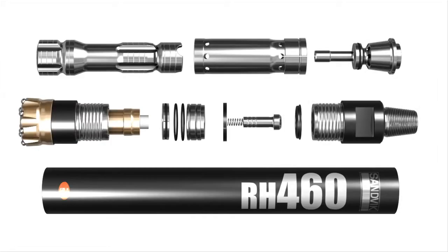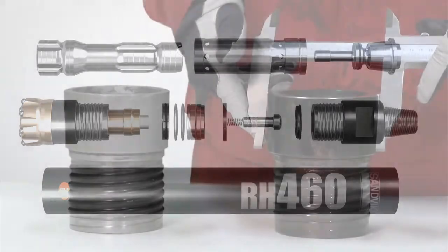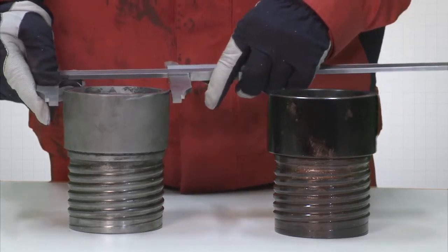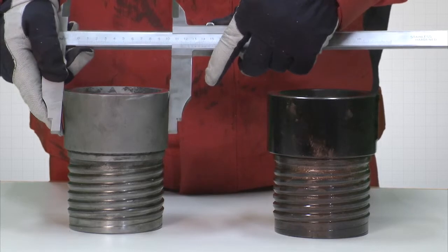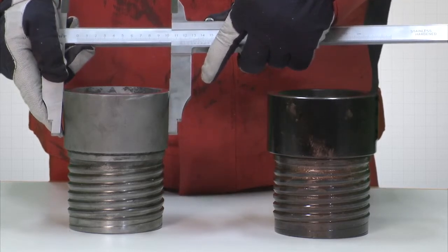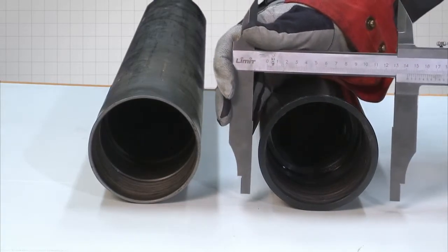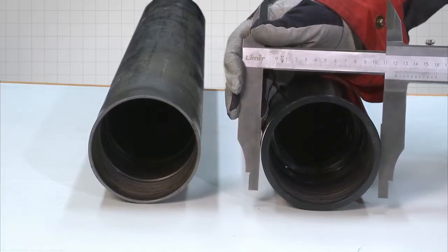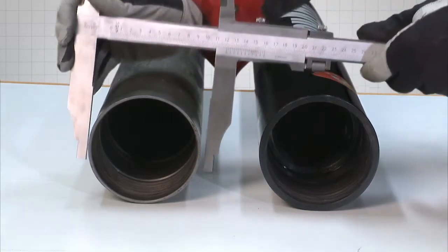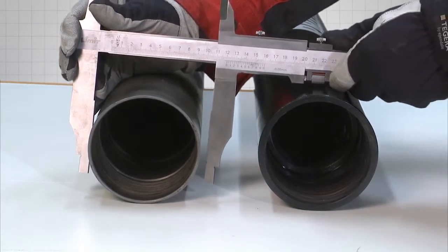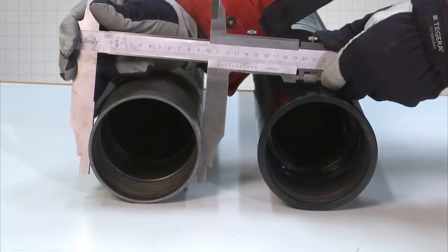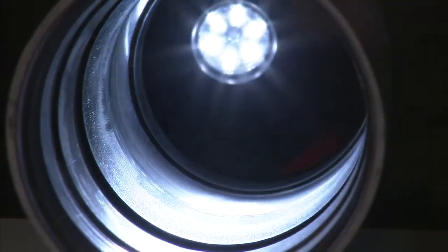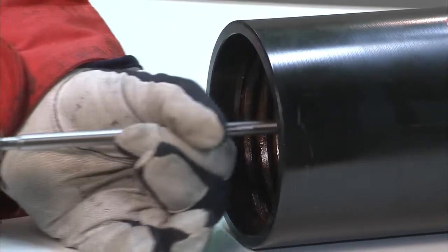Clean all the parts and prepare them for inspection. The driver sub should be replaced if the threads are damaged. Also discard the driver sub if the dimensions are not within the specified limits. Check that the internal and external diameter of the piston case is within the specified limits. This also applies if there's any internal damage such as scratches, nicks or burrs which could damage the piston. Such damages can often be repaired with an emery flap wheel.